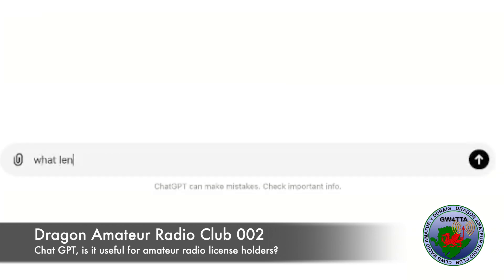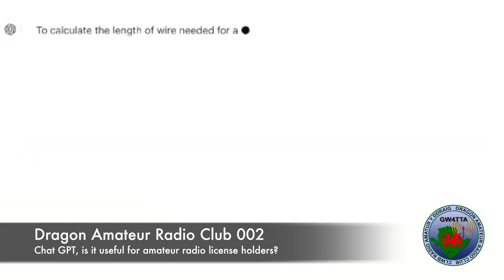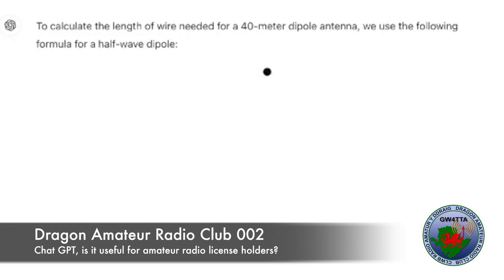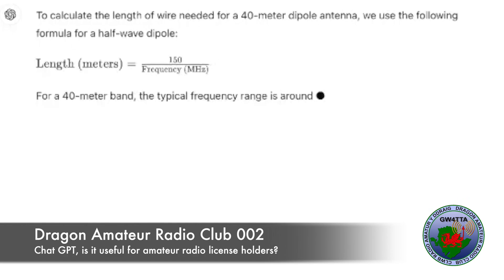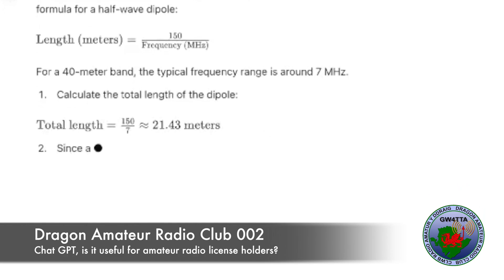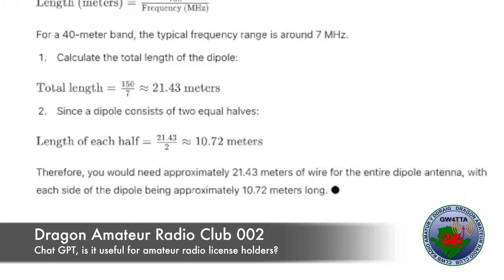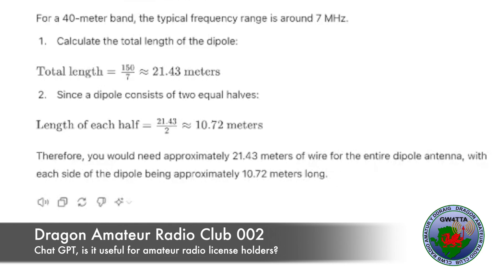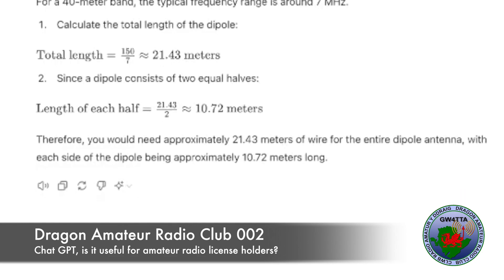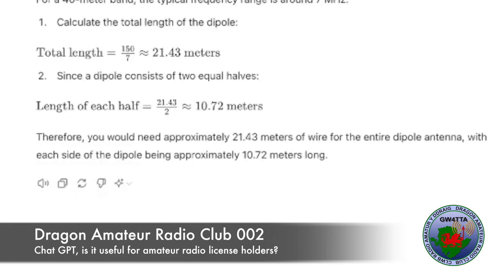What if you wanted to build a 40 metre dipole? What length of wire would you need? Let's ask ChatGPT. This gives you all the calculations and all the information you need about building a 40 metre dipole. It ends up telling you that you need approximately 21.43 metres of wire for the entire antenna, with each side of the dipole being about 10.72 metres long. Very useful.